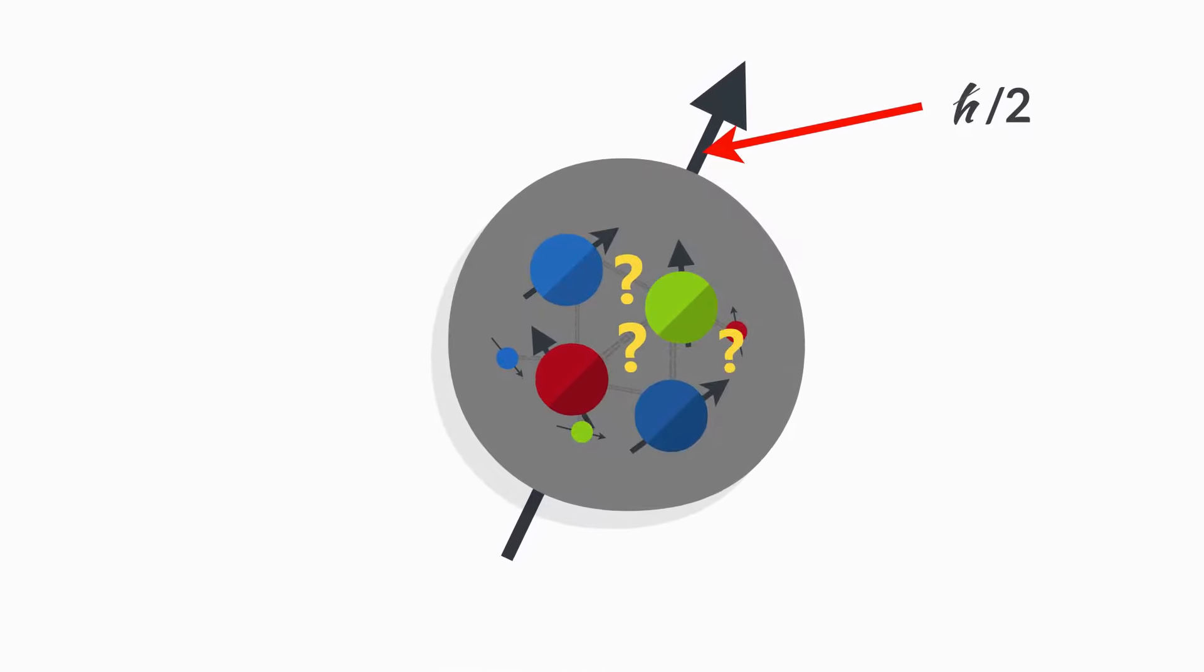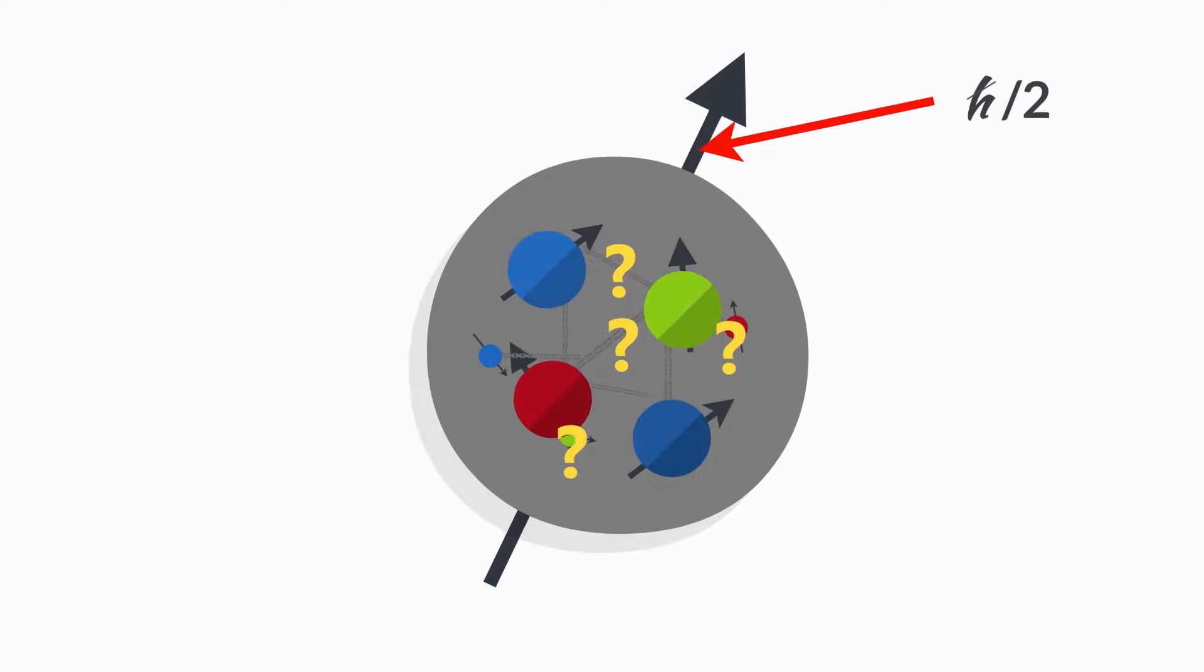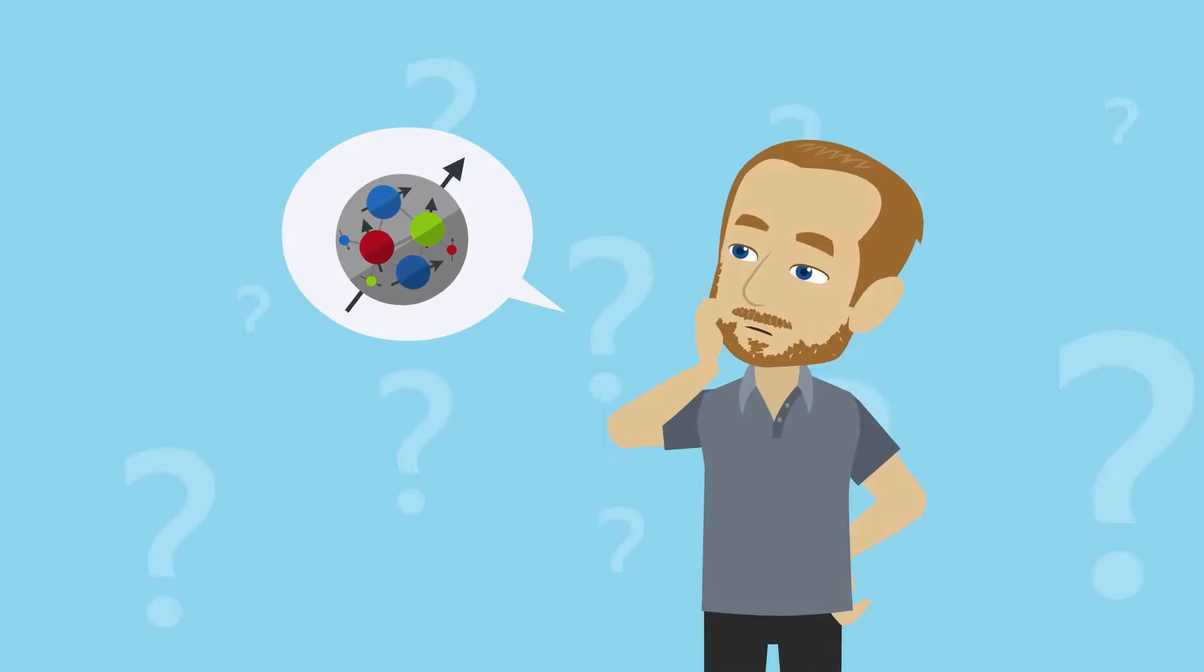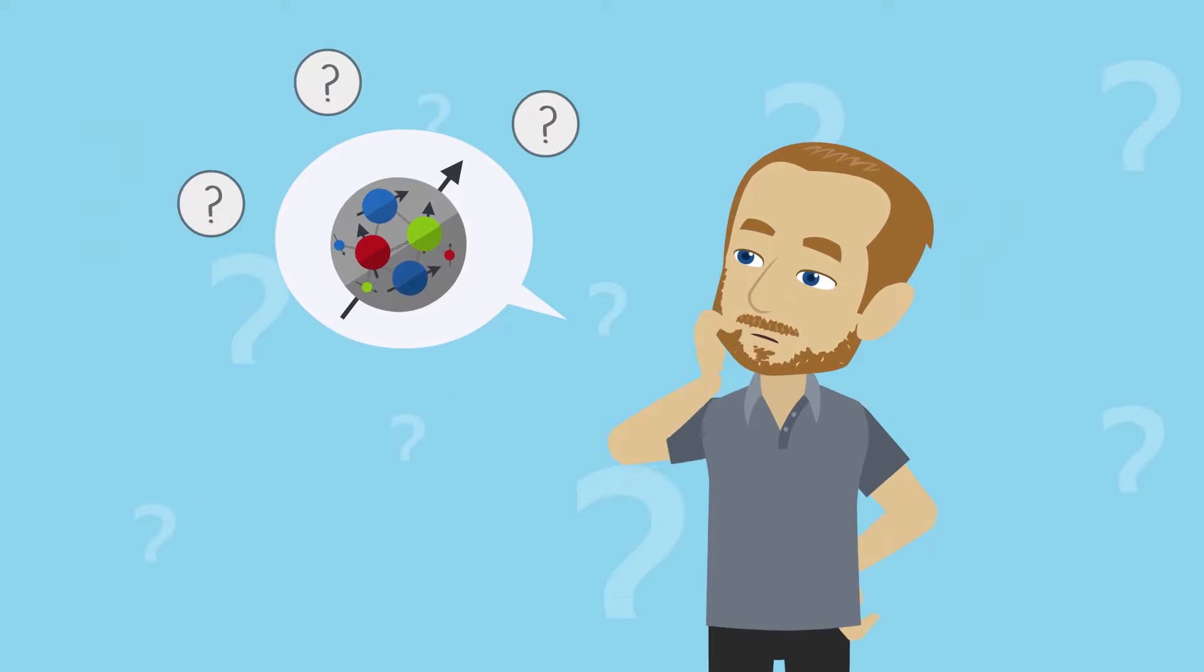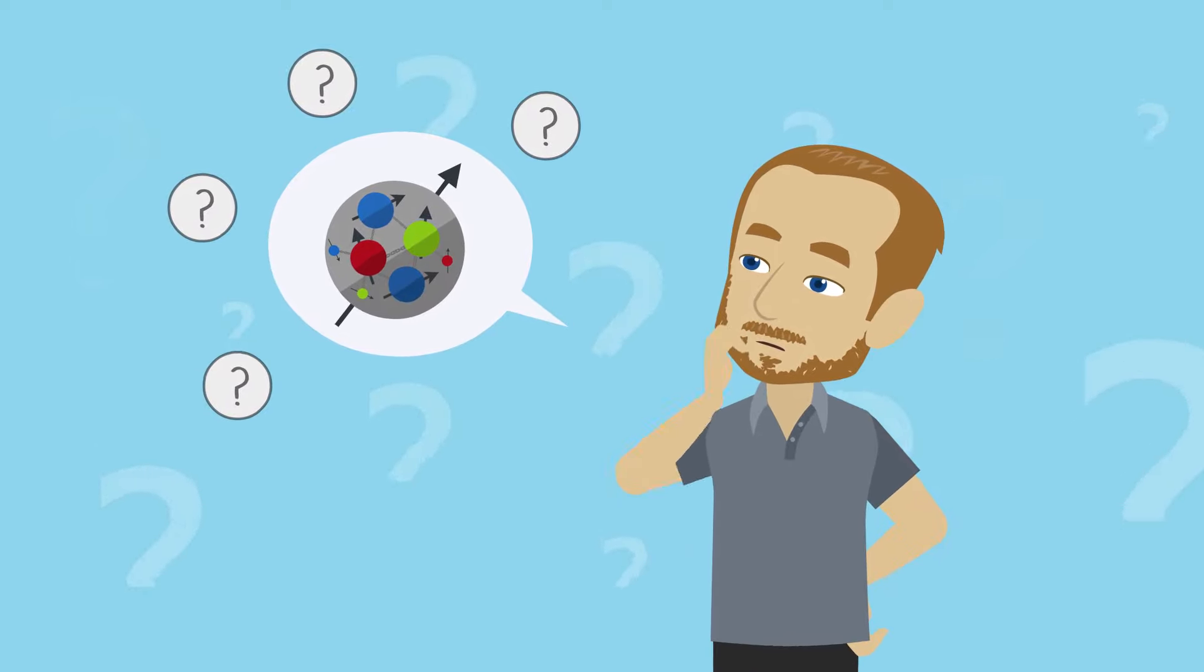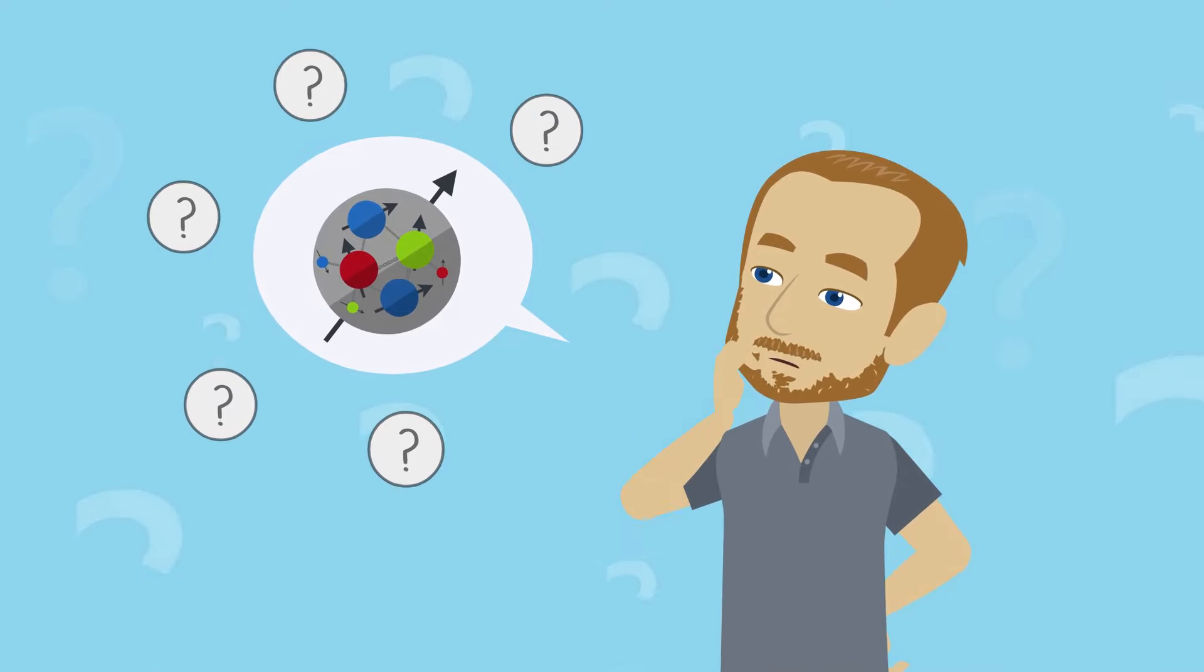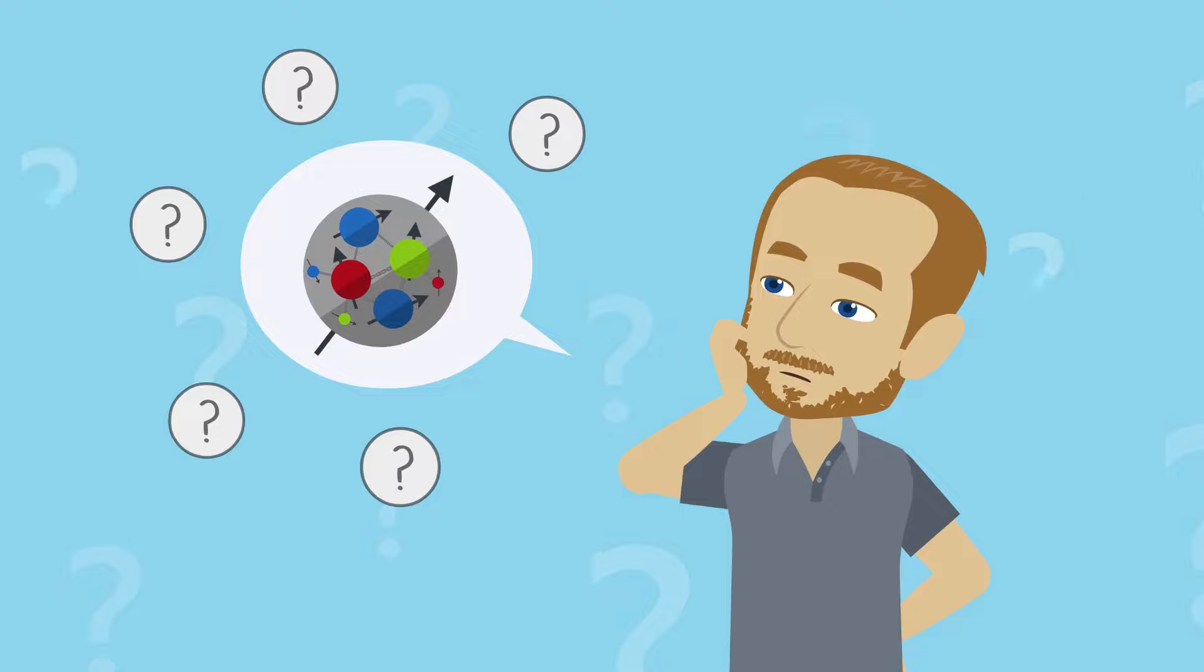However, exactly how much of a proton spin comes from each component remains a mystery, and this is something Daniel continues to work on. What makes this difficult is the proton actually contains a complicated sea of quarks and gluons, each with their own spin and moving around inside the proton.